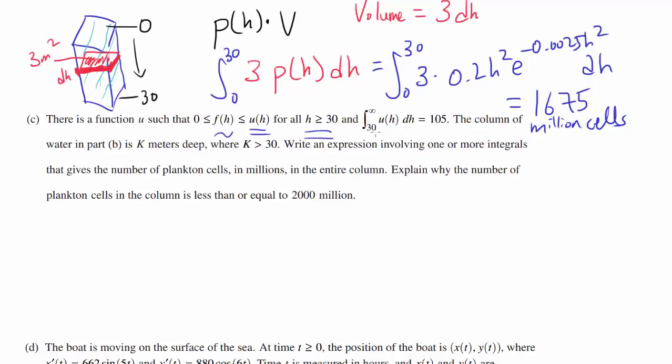We know the integral from 30 to infinity of U(H)dH = 105. The column of water in part B is K meters deep. So now instead of going to 30, we're going to K, where K is greater than 30. Write an expression involving one or more integrals that gives the number of plankton cells in millions in the entire column. Well, we can find the number from 0 to 30, doing the same thing, 3 times P(H)dH.